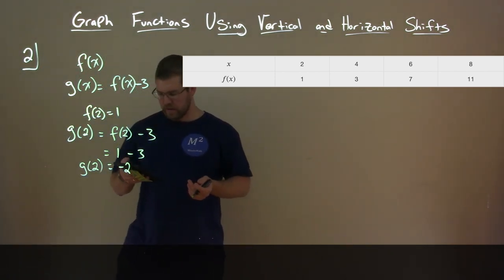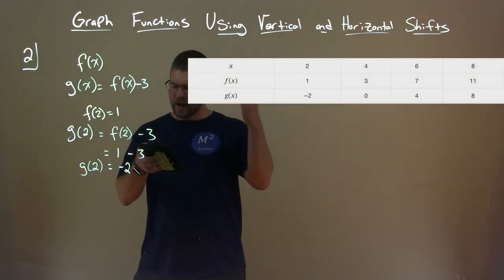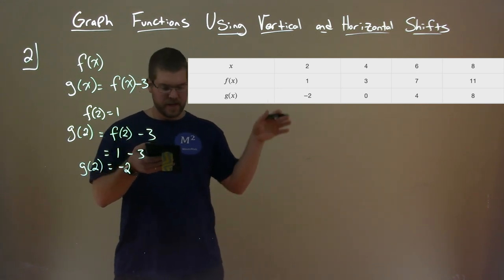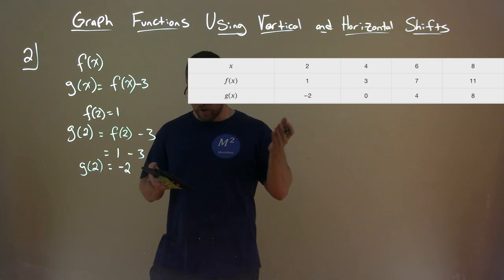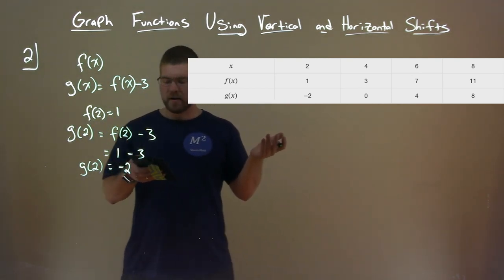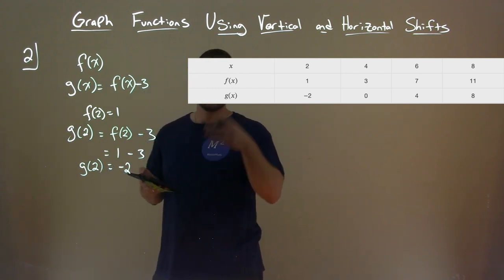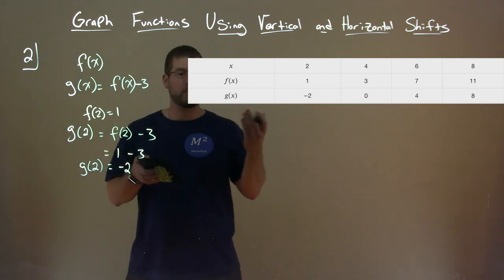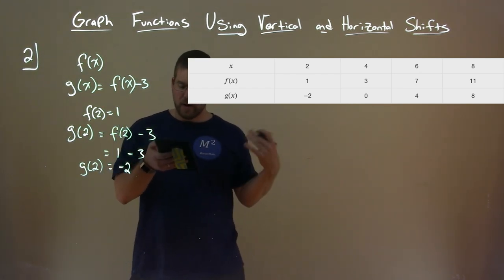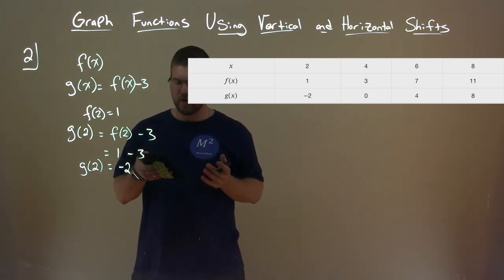If we apply it to the full table, we have x values 2, 4, 6, and 8, with f of x values 1, 3, 7, 11. The output of g of x, which is being shifted vertically by negative 3, so down 3, means we subtract 3 from all of the f of x values. We get negative 2, 0, 4, and 8. That's how you shift a table vertically.